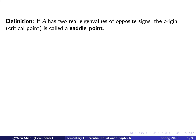Now let's introduce the definition for this type of critical point. If the matrix A has two real eigenvalues of opposite signs — which means they are distinct — then the origin, which is a critical point, is called a saddle point. The term saddle comes from the shape of these trajectories, which resemble a saddle that you can sit on.